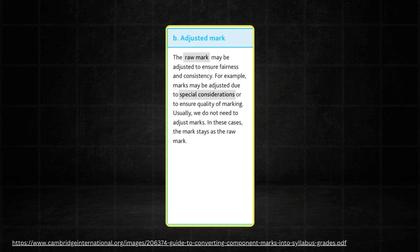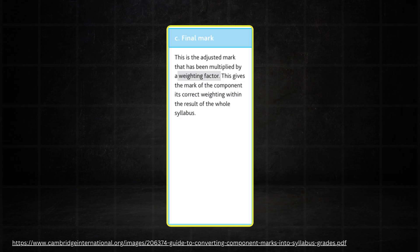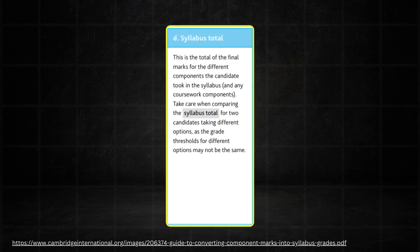This adjusted mark, or raw mark if nothing was done to it, is then multiplied by a weighting factor to give you the final mark for that component paper. Once this has been done for every component, the final grades for each component are added together to give the syllabus total.